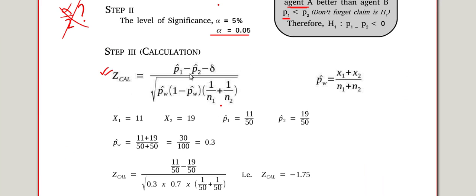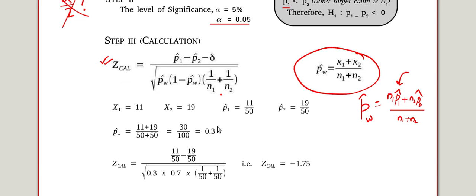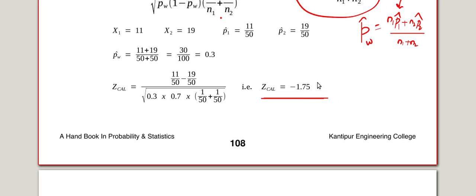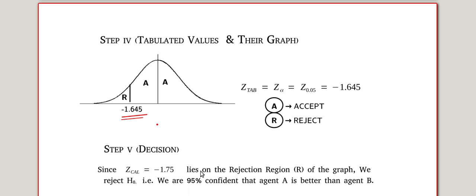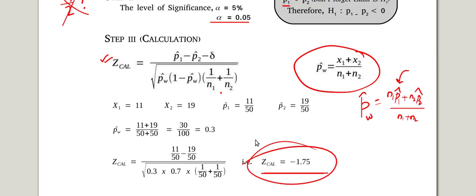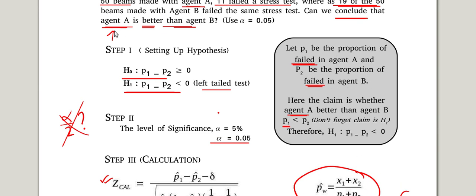Now we write the formula, P1 cap minus P2 cap. If you want, you can use this formula. If you don't like this, you can go for N1 P1 cap plus N2 P2 cap, the whole divided by N1 plus N2. The advantage is, if you use this, you can use even percentage directly. That is it. You got Z calculated minus 1.75. And it is a left tail test. So it is in the rejection region. So reject H0, that means accept H1. That means agent A is better.